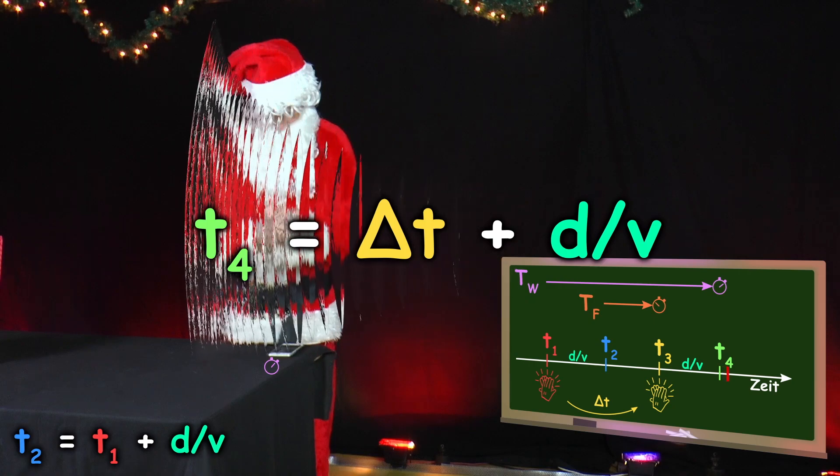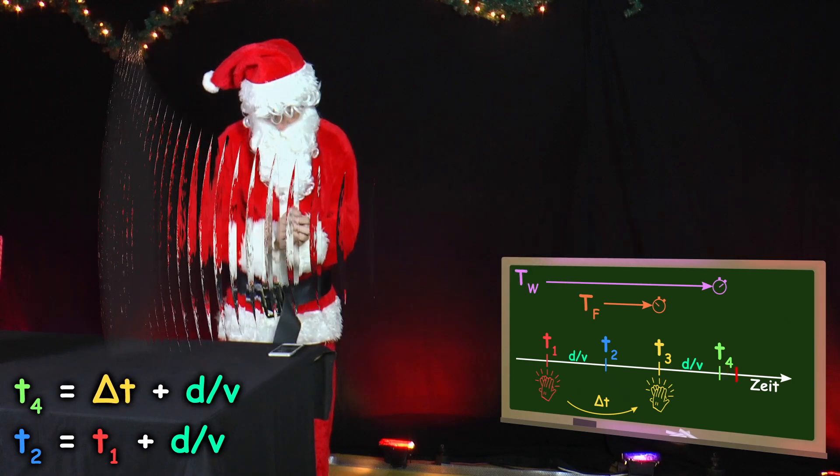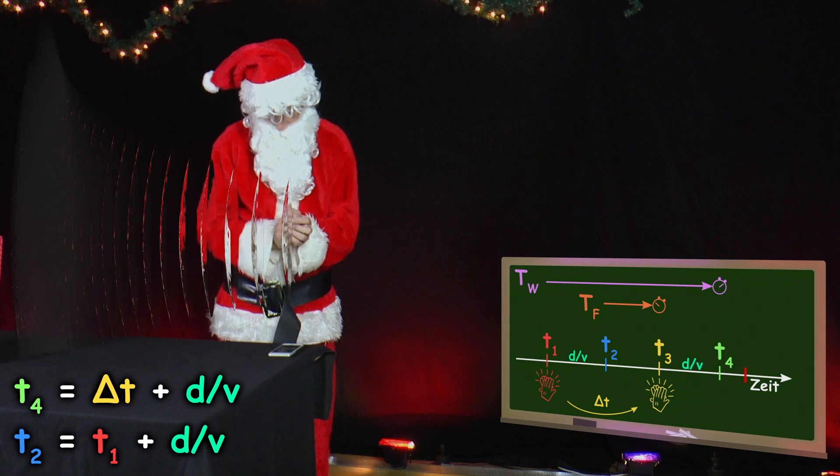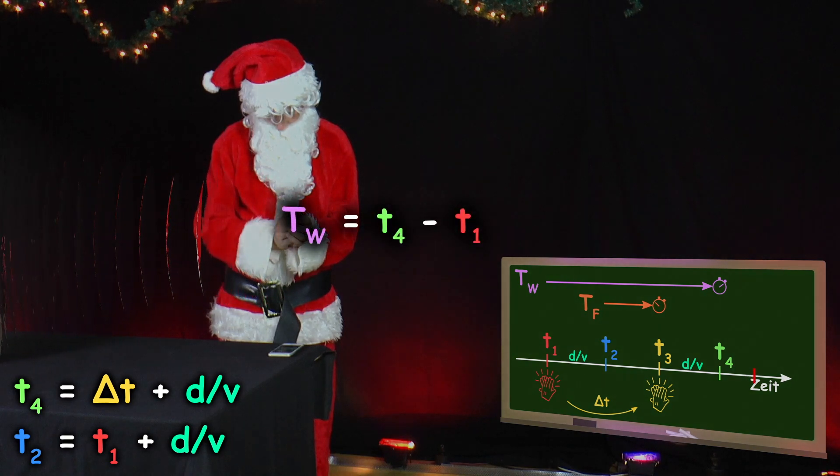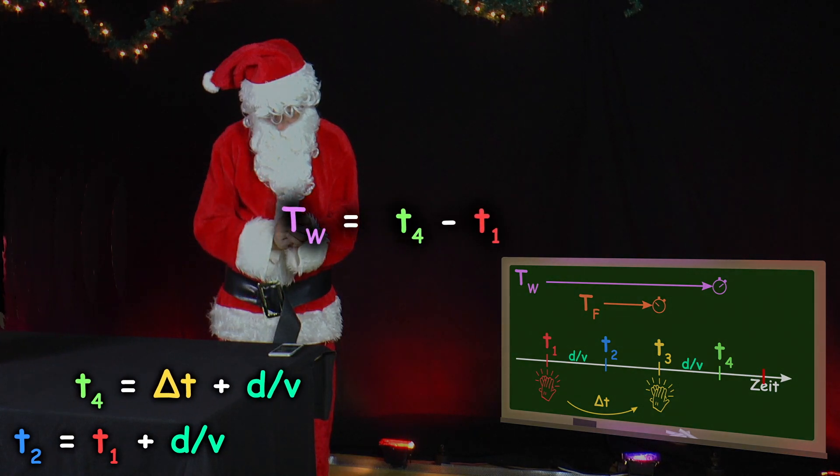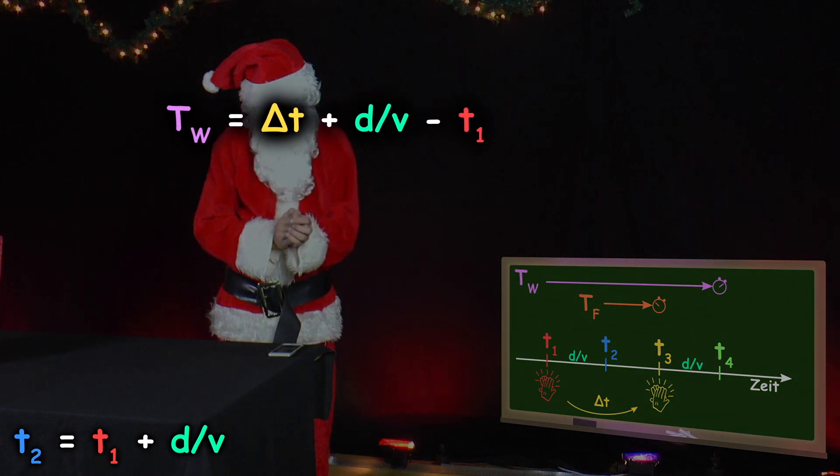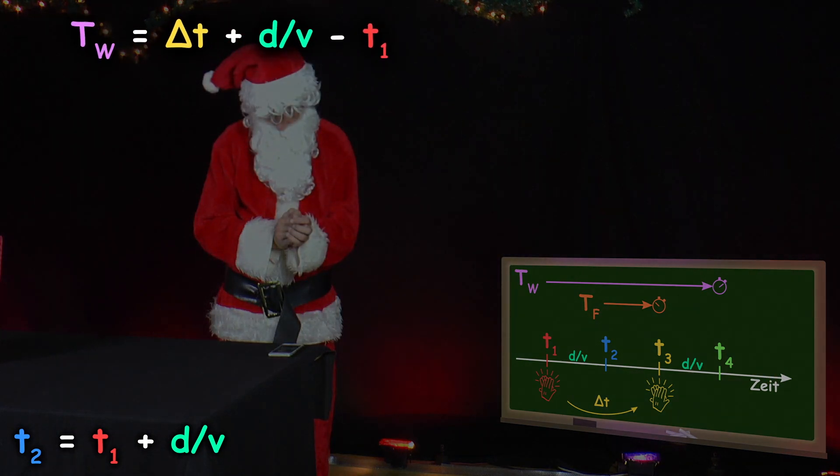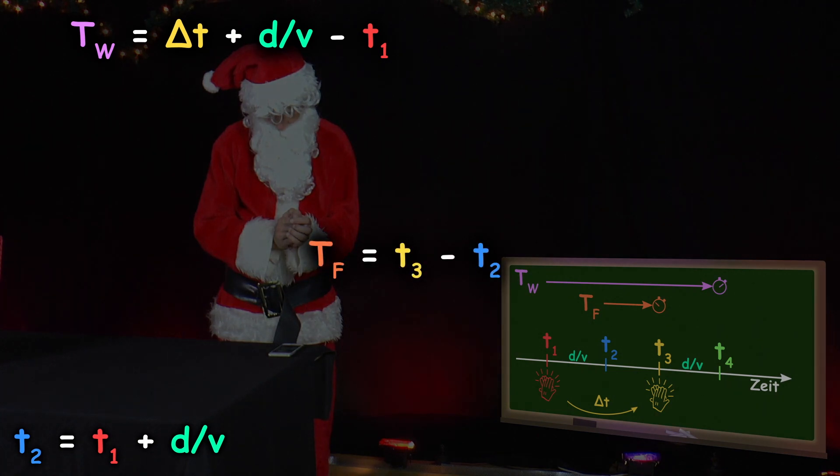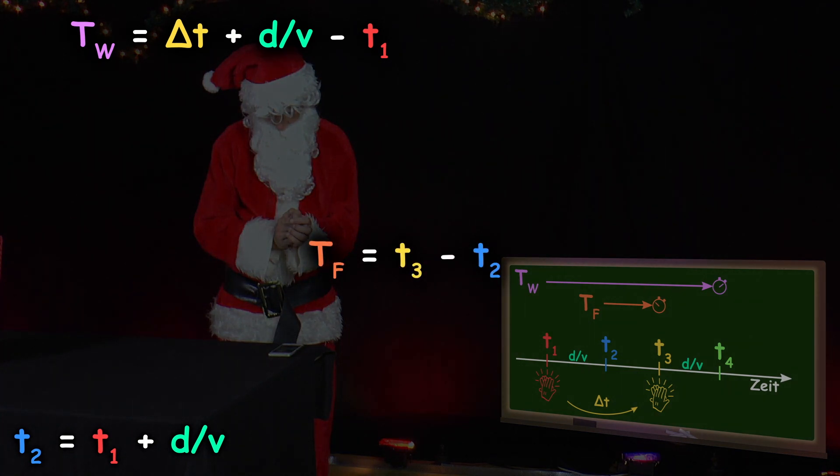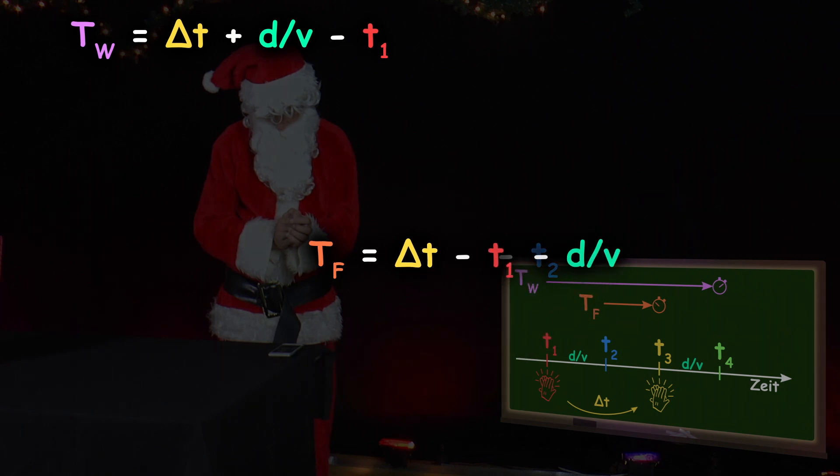The stopwatch of Mr. Santa thus shows the time TW equals T4 minus T1 equals delta T plus D divided by V minus T1. That of his friend TF equals T2 minus T1 equals D divided by V.